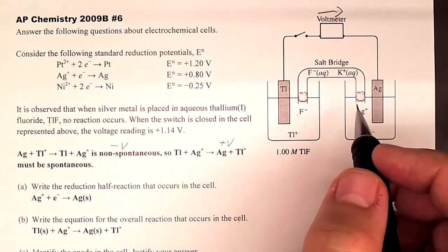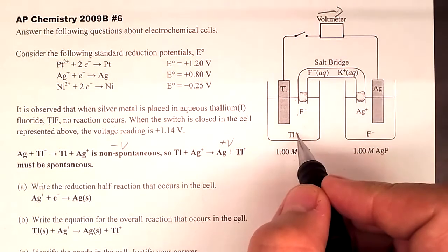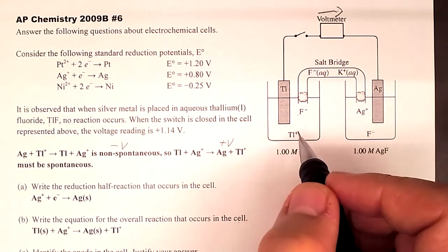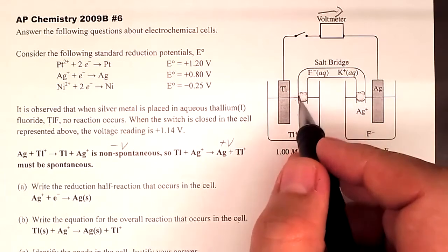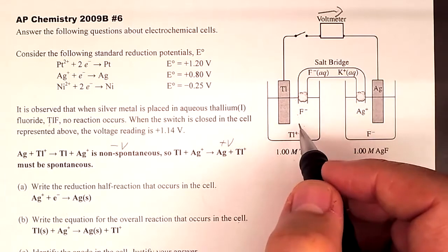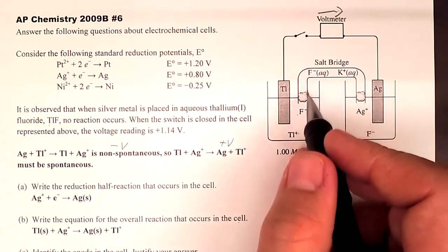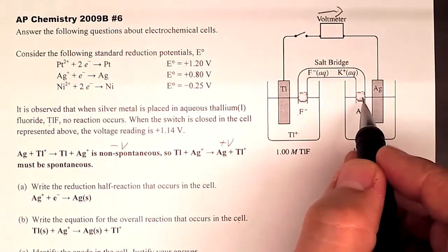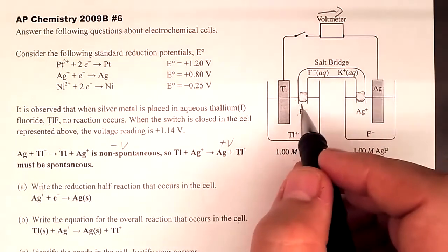The salt bridge ions don't have to be singly charged — it could be a 2+ cation requiring two anions. The charges flow to maintain neutrality. Eventually you can run out of ions in the salt bridge and the reaction stops. Cotton balls in the bridge prevent the solution from draining out immediately.